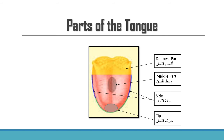The letters قاف and كاف exit from the deepest part of the tongue — we covered this last week. جيم, شين, and يا exit from the middle of the tongue. There is only one letter that exits from the side of the tongue, and the majority of the alphabets exit from the tip of the tongue.